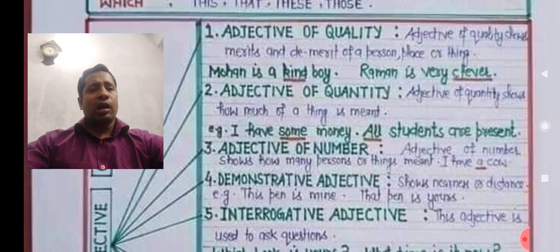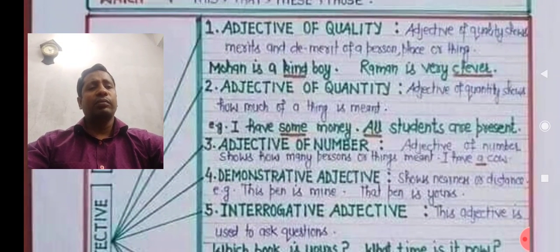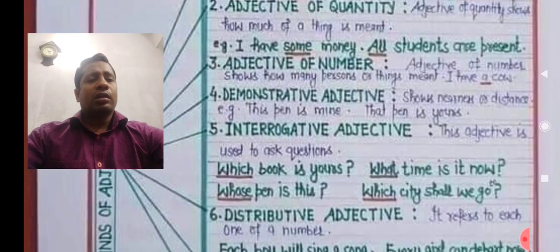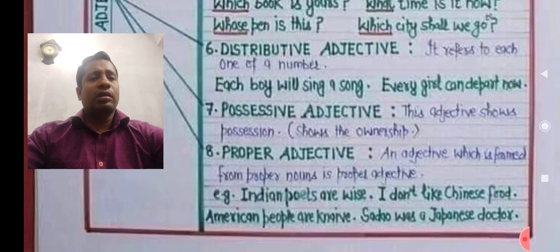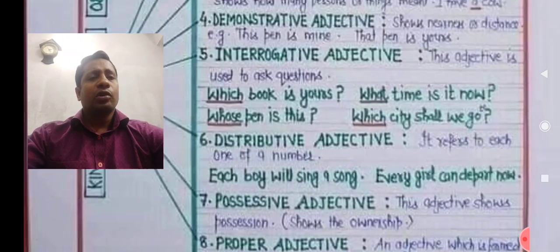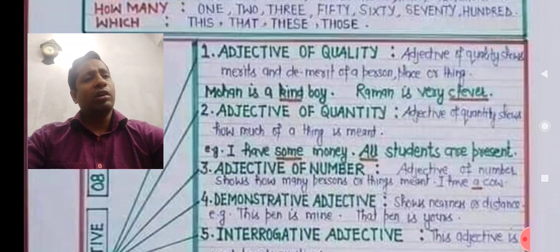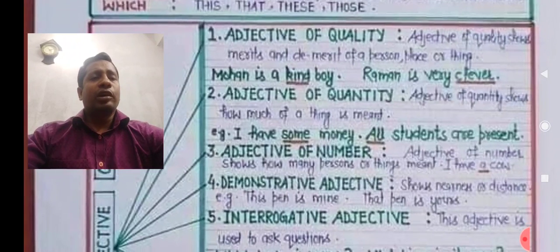Now I will show a diagram that describes the classification of adjectives. There are eight classes of adjectives. Look and underline or note the words in your answer script. First: adjective of quality.